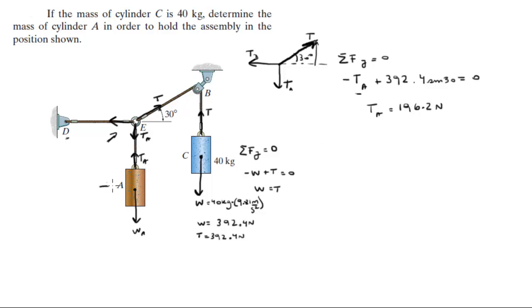Now you know from this body diagram right here that the sum of the forces in the y-direction in statics is equal to zero. Therefore, tension of A minus the weight of A is equal to zero, which means that the tension of A is equal to the weight of A.